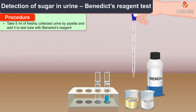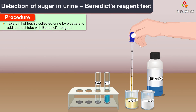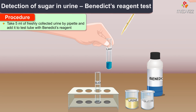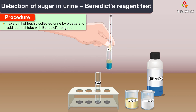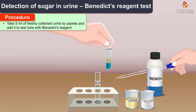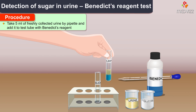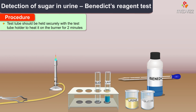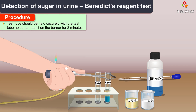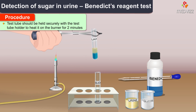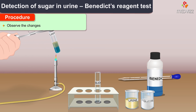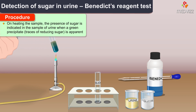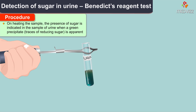Take 5 ml of freshly collected urine by pipette and then add it to the test tube with Benedict's reagent. The test tube should be held securely with the test tube holder to heat it on the burner for two minutes. Now start observing the changes on heating.